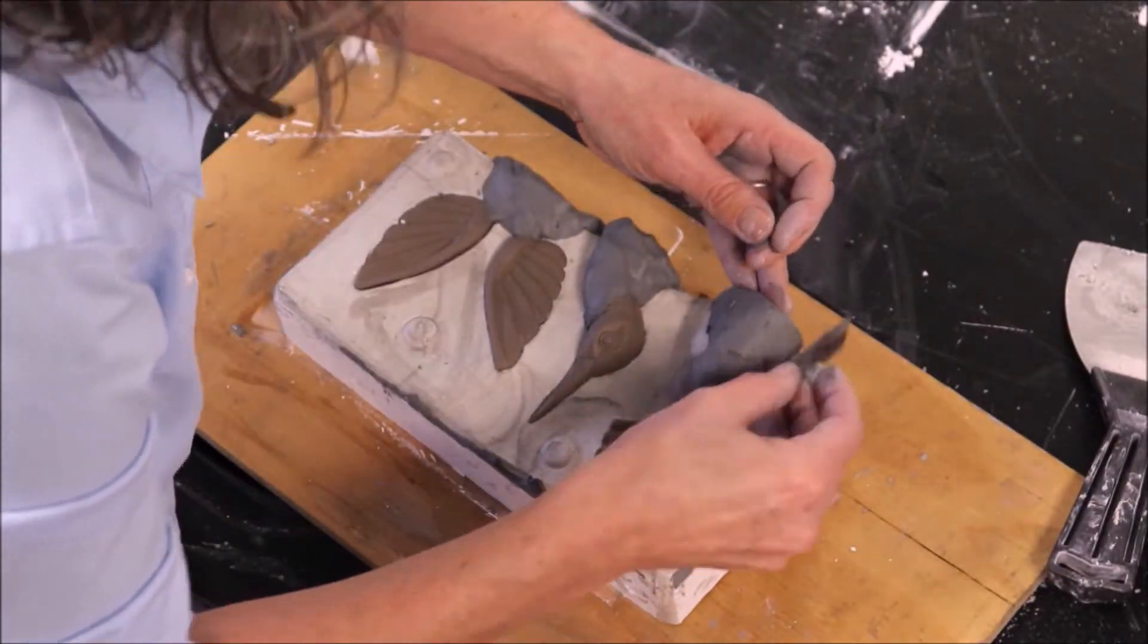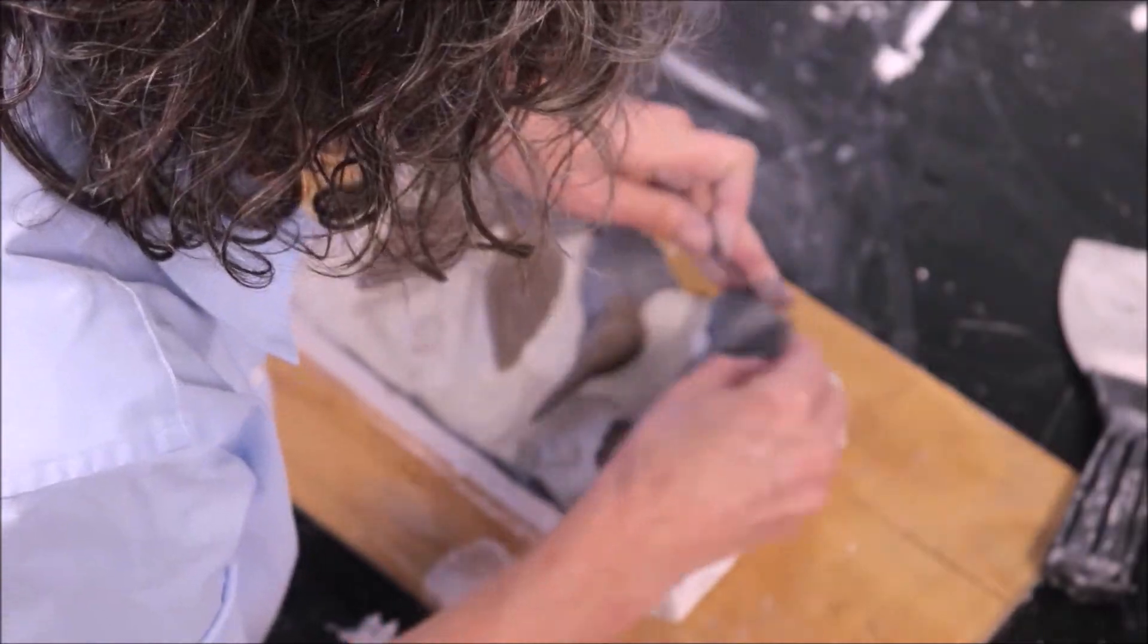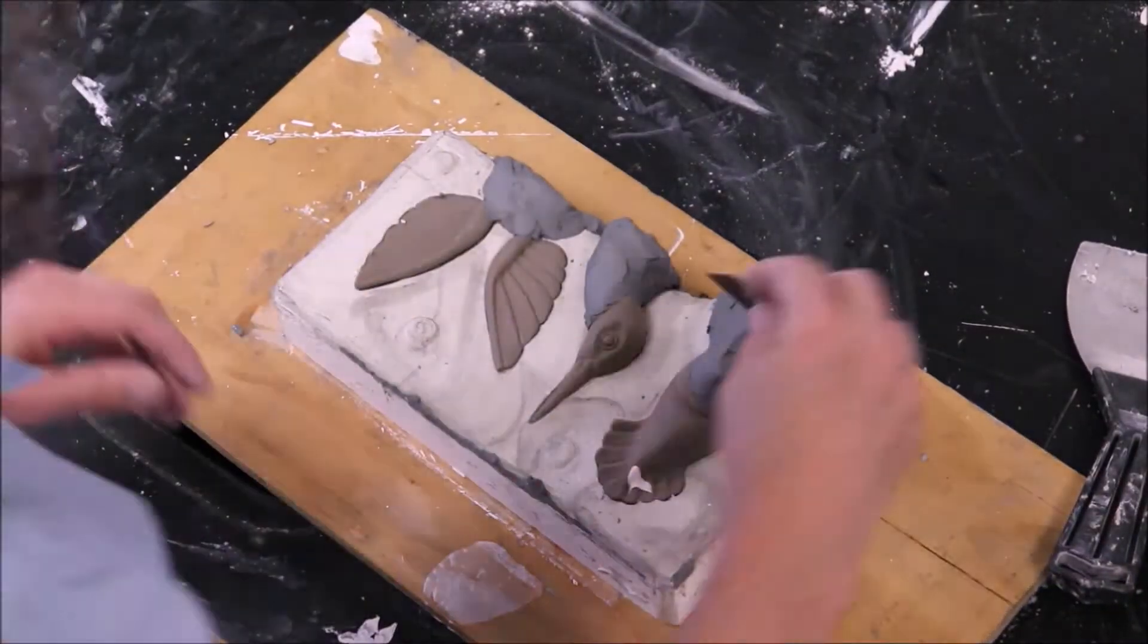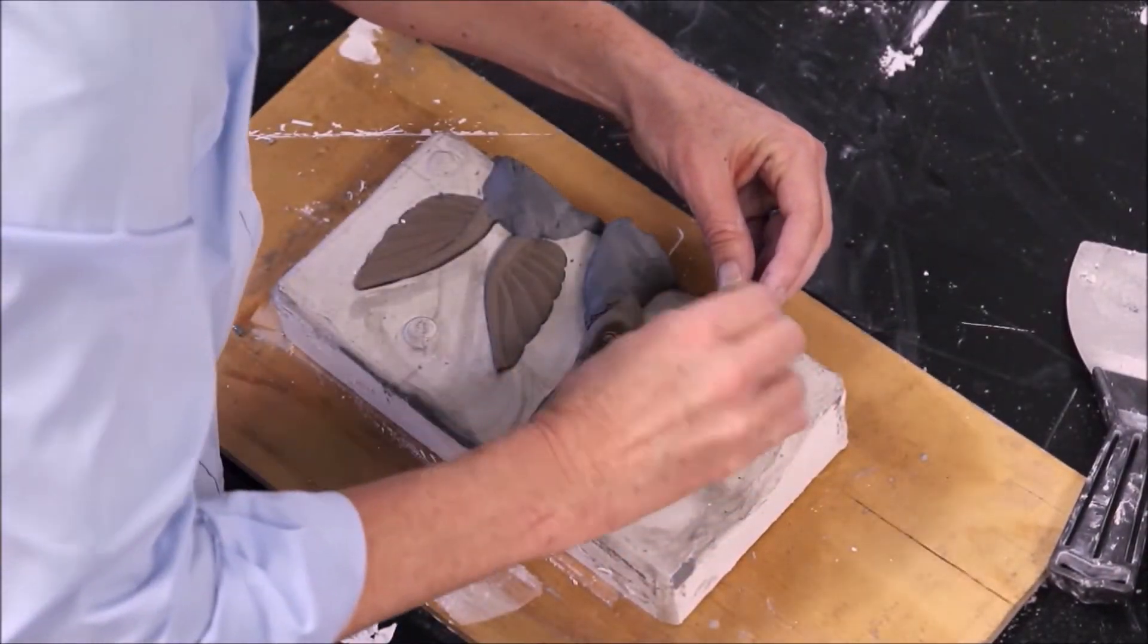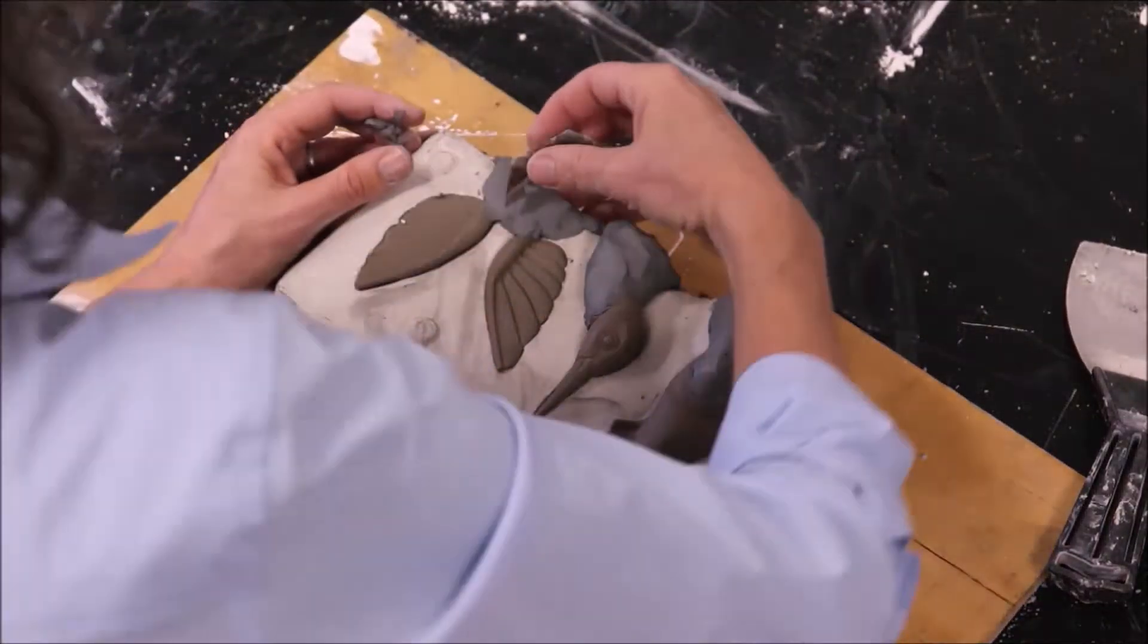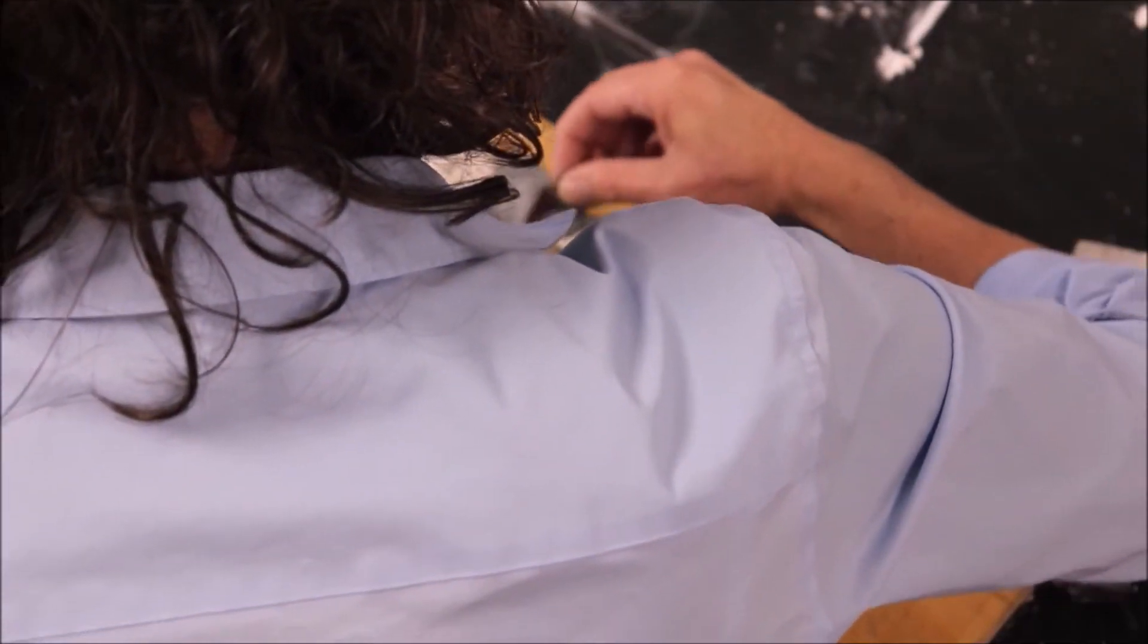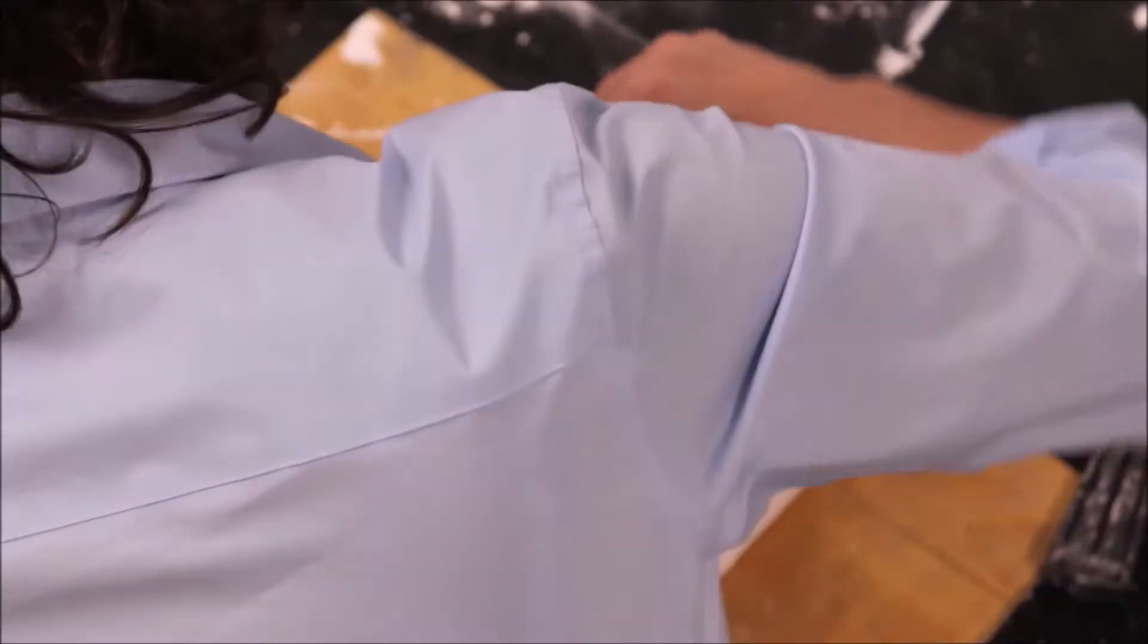Again, your plaster mold doesn't have to be all the way cool to open it. It can still be rather hot when you open it. You just want to make sure that it has reached its maximum temperature before you open it. Since my object inside the mold is made out of clay, this is not crucial. I do not have to go through this process quickly. I can take my time in regard to opening the mold.